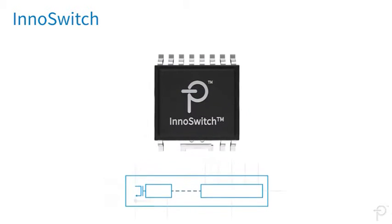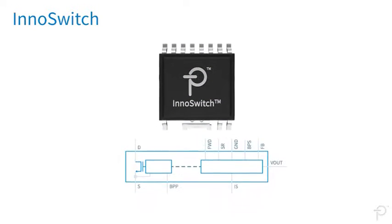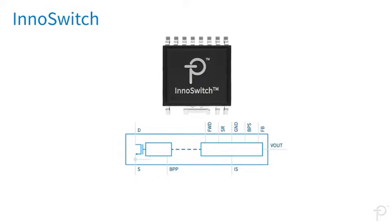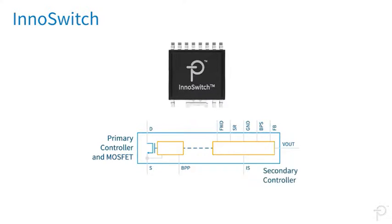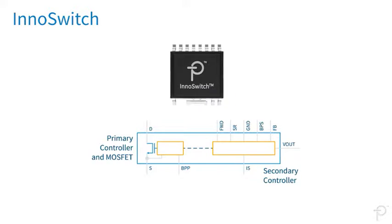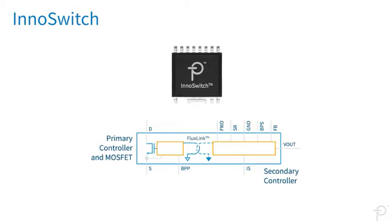The revolutionary design of the InnoSwitch family is ideal for safe and reliable synchronous rectification. InnoSwitch ICs combine primary and secondary controllers that communicate via a safe feedback mechanism called FluxLink.